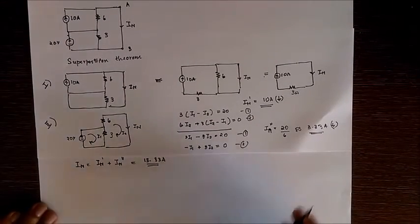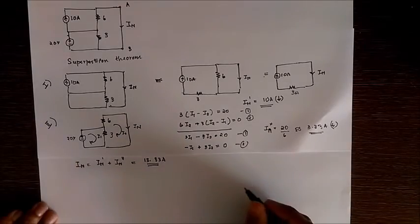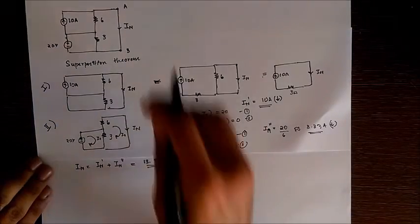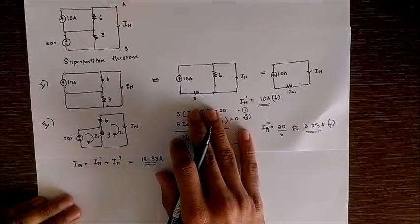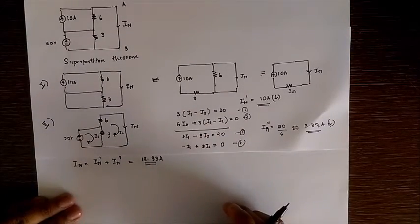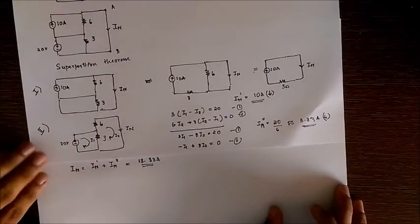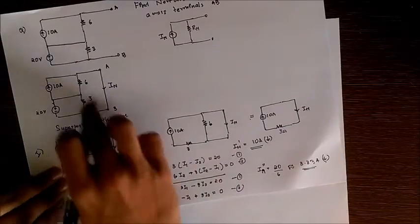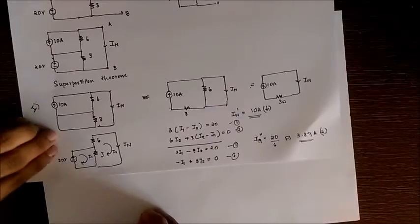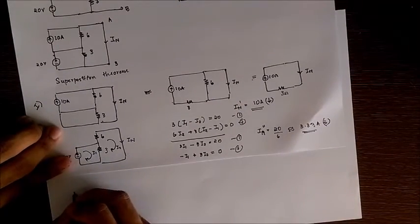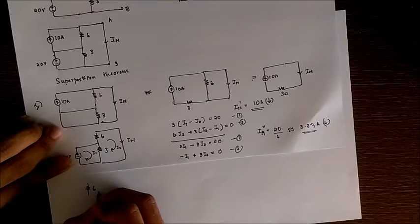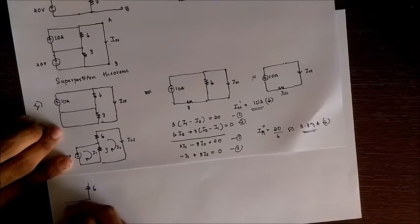Now we have to find out the Norton resistance. For this we deactivate the two sources. When deactivating the two sources, we get a circuit somewhat like this.